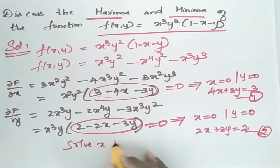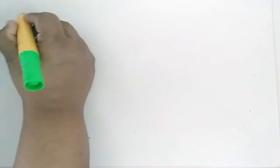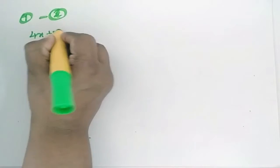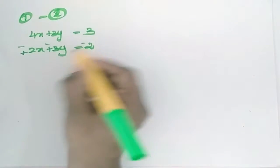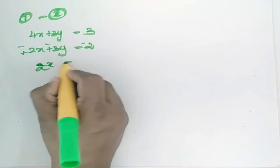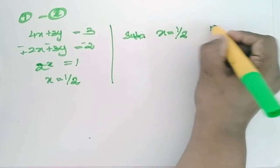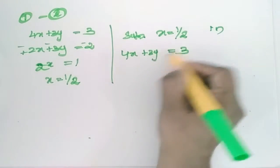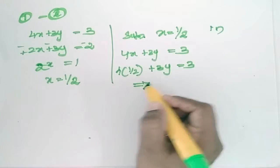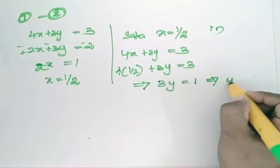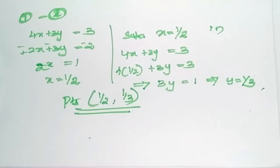Solve x and y using equations 1 and 2. Subtracting equation 2 from equation 1: 4x + 3y = 3 minus 2x + 3y = 2 gives 2x = 1, so x = 1/2. Substituting x = 1/2 into 4x + 3y = 3: 2 + 3y = 3, so 3y = 1, y = 1/3. The critical point is (1/2, 1/3).